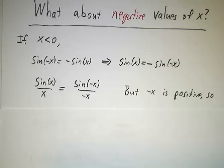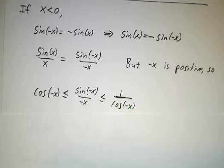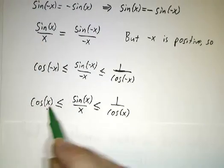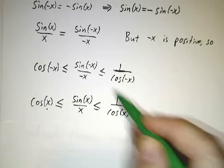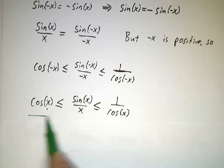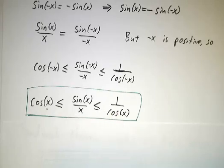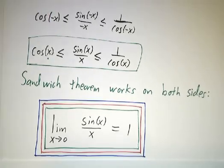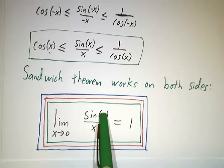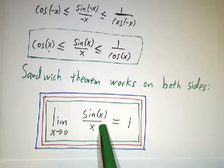We get that cos(−x) ≤ sin(−x)/(−x) ≤ 1/cos(−x). Then we use the fact that cos(−x) = cos(x) and 1/cos(−x) = 1/cos(x), and we already showed sin(−x)/(−x) = sin(x)/x. So we have our squeeze: cos(x) ≤ sin(x)/x ≤ 1/cos(x), which is the same squeeze used for positive x. It still works for negative values of x. So it's not just a one-sided limit — no matter which direction you go, the limit as x approaches 0 of sin(x)/x is 1. If you plug in a tiny value of x, the numerator is small, the denominator is small, but the ratio is close to 1.